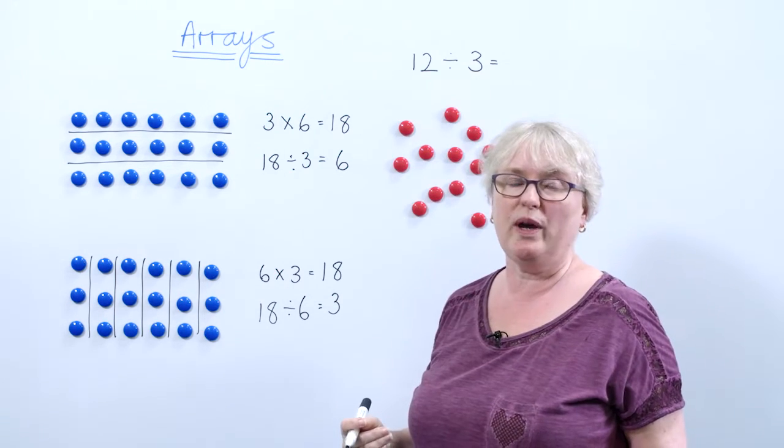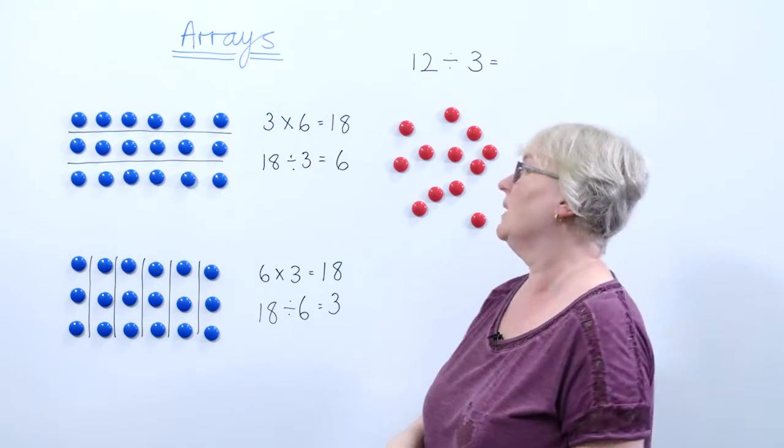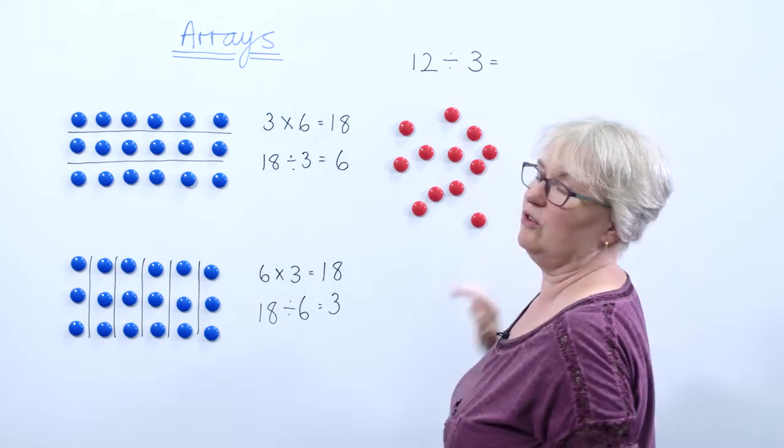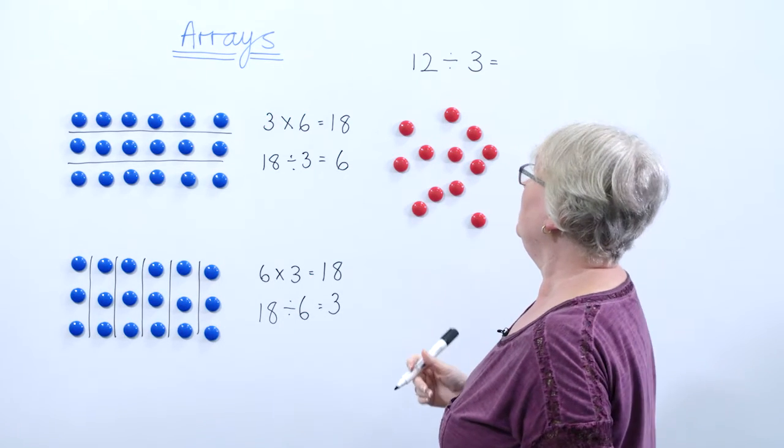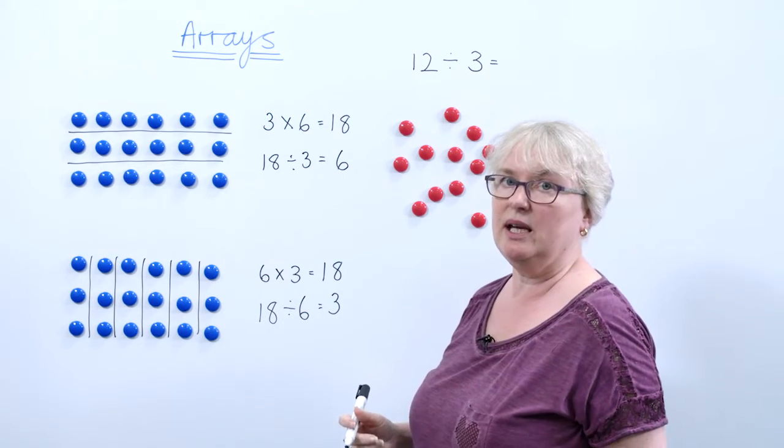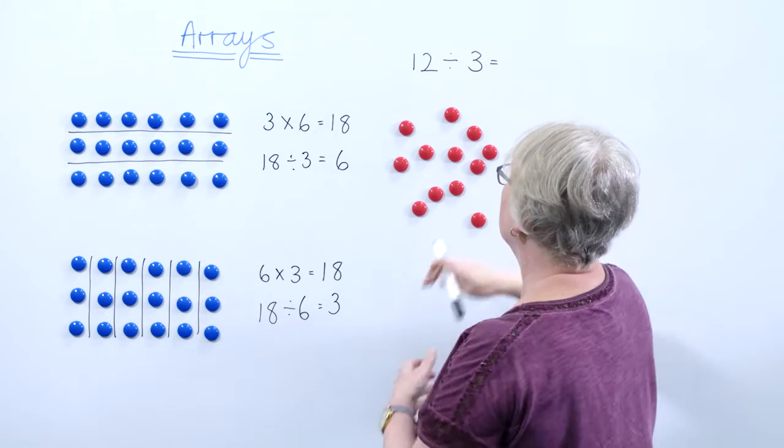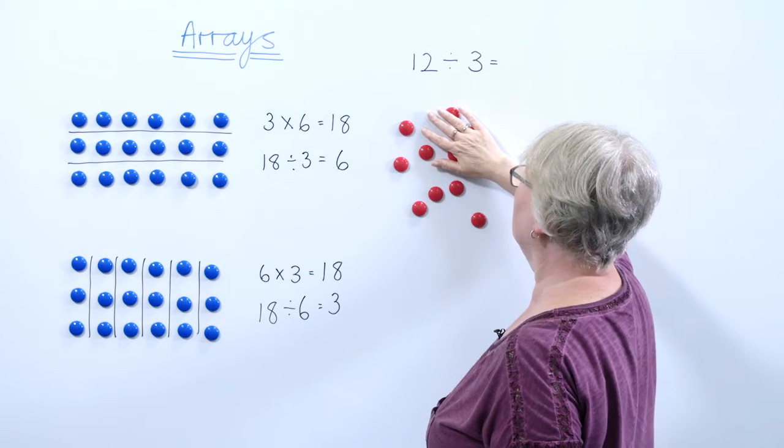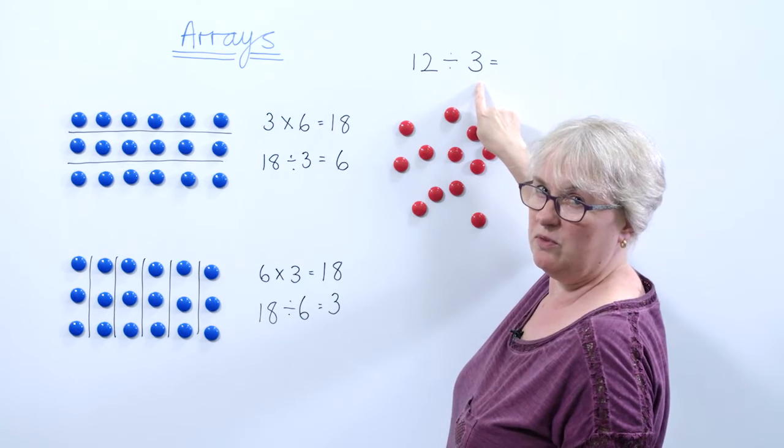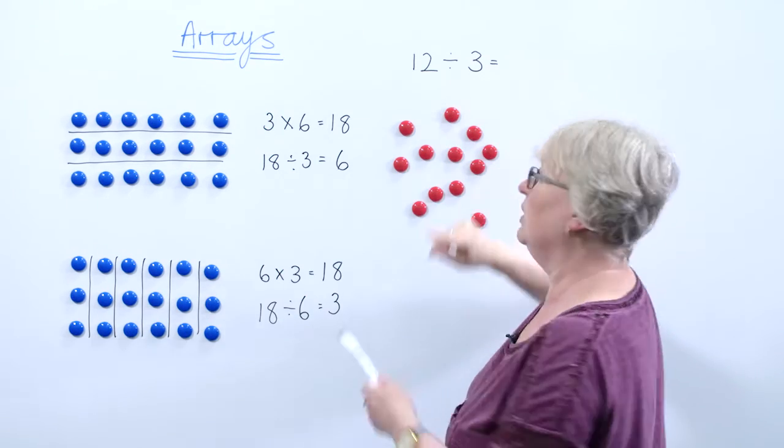I've got the question what is 12 divided by 3 and I've got some red counters. It's important that when they're making an array they make sure that the rows are all the same length. So I've got 12 counters here and I'm going to divide them so I'm going to need to make three rows.